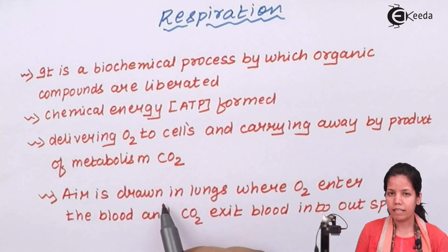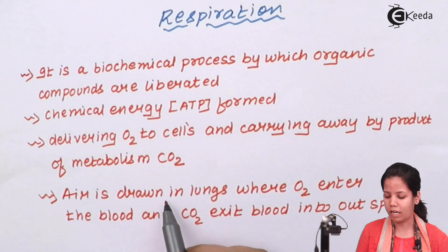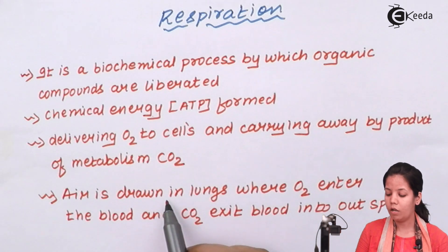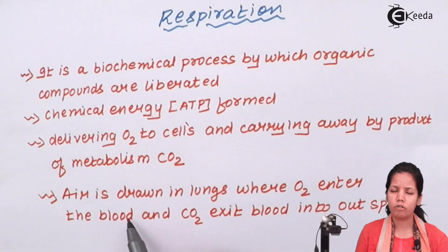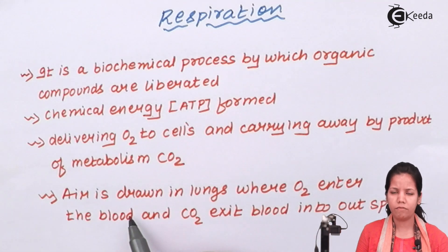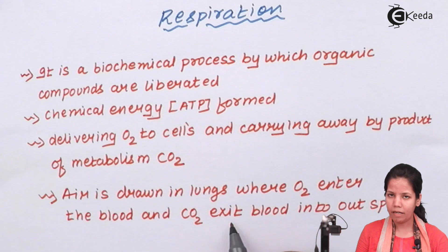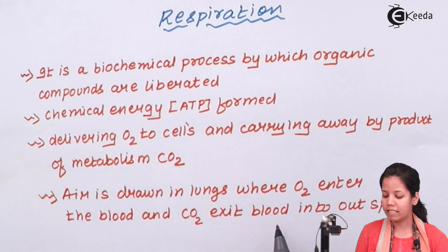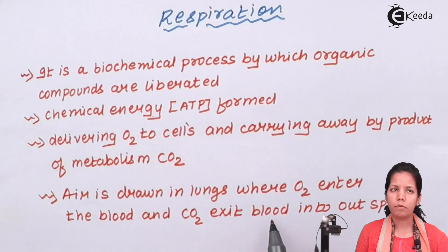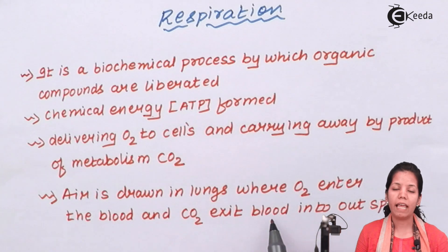The air taken into the lungs is a combination of oxygen and carbon dioxide. Oxygen enters your blood and finally reaches your tissues, organs, and systems where it performs its function. Whereas carbon dioxide exits out of your blood into outer spaces, and finally from your nostrils it is exhaled out.